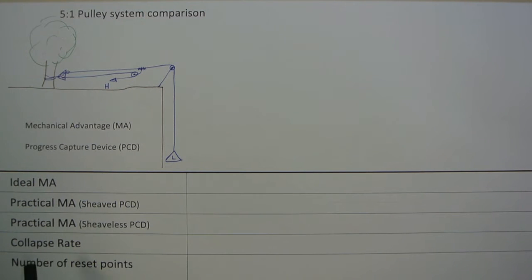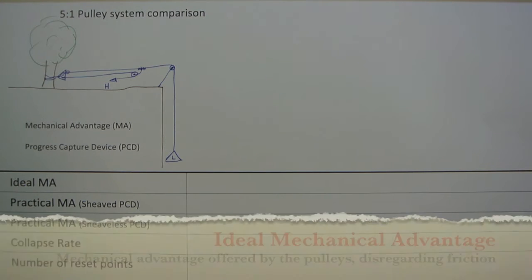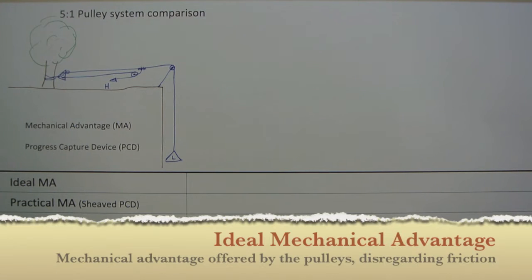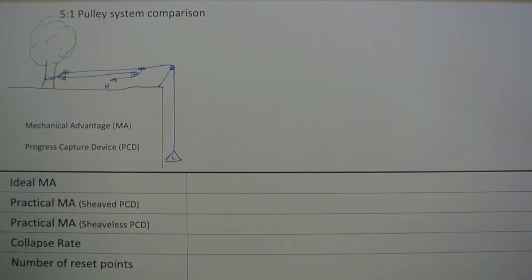So our criteria: the first one is ideal mechanical advantage. If we look at ideal mechanical advantage, it's the mechanical advantage offered by the pulleys disregarding friction. So it will be a whole number, and in this case it will be 5 to 1.